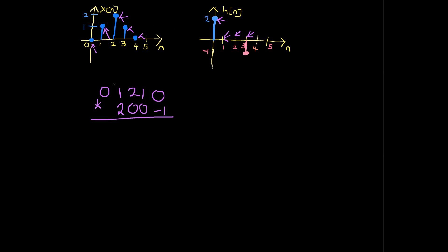All you do is multiply. Two times zero is zero, two times one is two, two times two is four, two times one is two, two times zero is zero. And we have the zeros row — multiply by zero, you get all zeros.